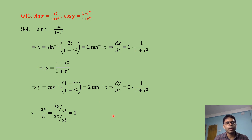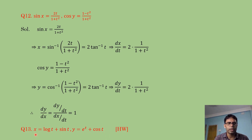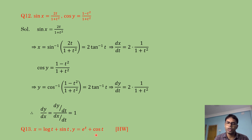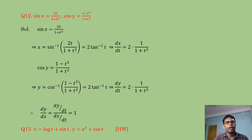Question 13: x = log t + sin t, y = eᵗ + cos t. This is straightforward — dx/dt = 1/t + cos t, dy/dt = eᵗ − sin t — and then you divide to get dy/dx. I am leaving this question for you to solve.